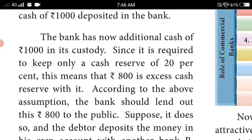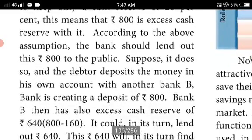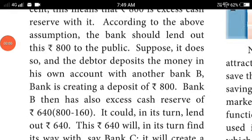The bank now has additional cash of 1000 in its custody. Since it is required to keep only a 20% cash reserve, that means 200 is kept and rupees 800 is excess cash reserve. According to the above assumption, the bank should lend out rupees 800 to the public — keeping 20% from the 1000 and lending out 800.